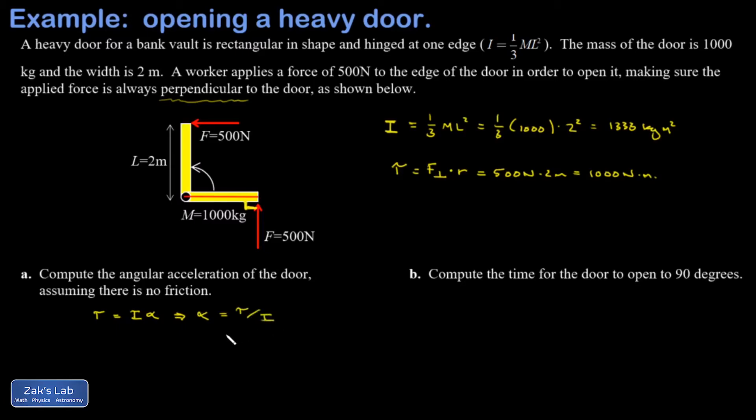Which is 1,000 newton meters divided by 1,333 kilogram meters squared, and I get 0.75 radians per second squared.